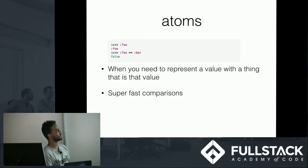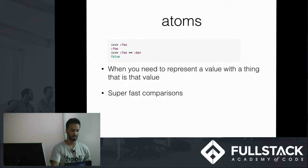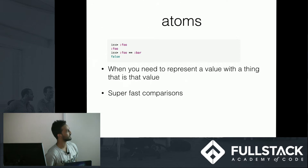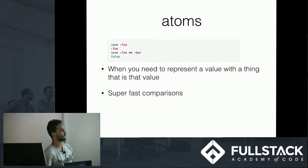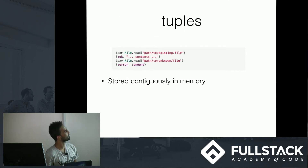Now on to Elixir syntax. In Elixir you have atoms, which are kind of like Ruby symbols — you can think of them as string constants. They're used to represent a value that is that value, and they have super fast comparisons. JavaScript ES6 also has symbols, similarly.